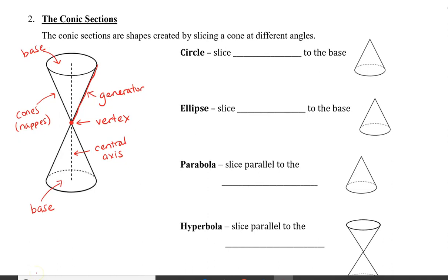Now that I've identified the different parts of the cone, let's look at how to slice it to get the four conic sections. The first is the circle: if we slice the cone parallel to the base and lift up the top piece, we see that the bottom of that piece is in the shape of a circle. Next is the ellipse: the ellipse is created when we slice the cone oblique to the base. It's important that we don't cut the base — otherwise we won't get an ellipse. When we lift up the highlighted top part, we see a shape that resembles an ellipse.